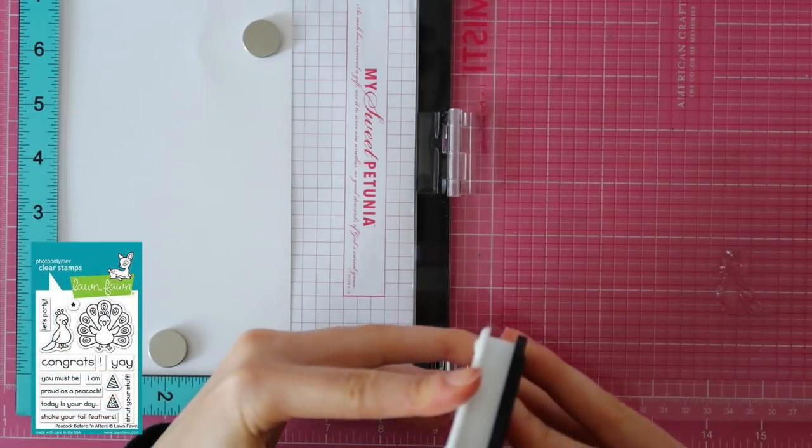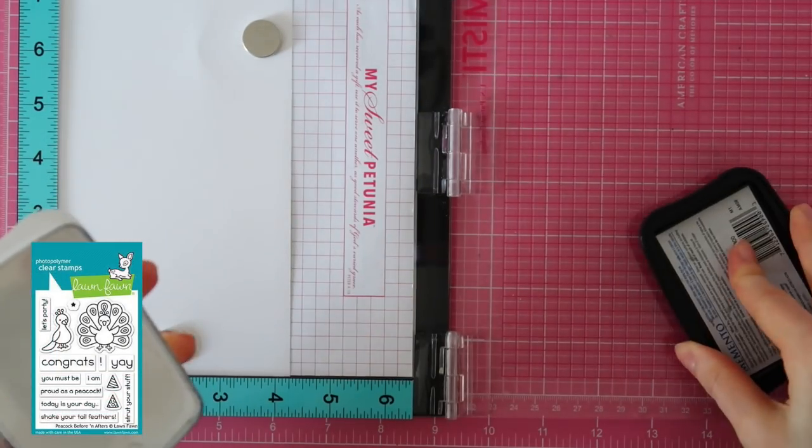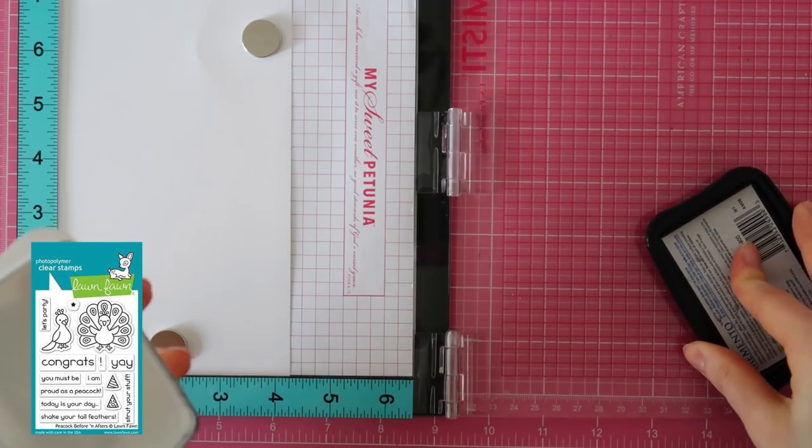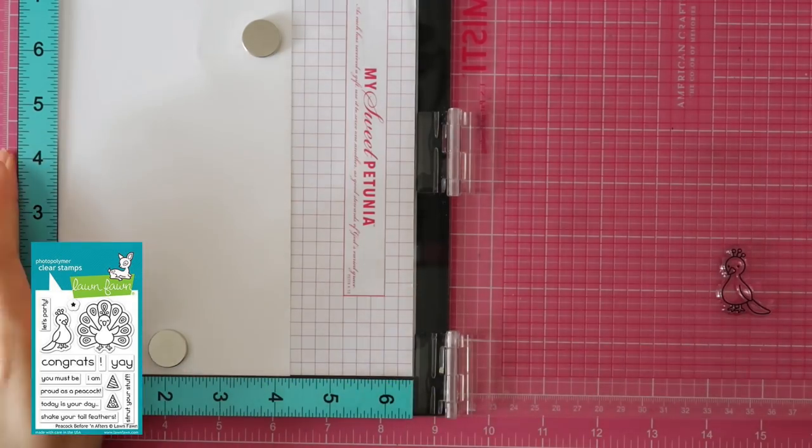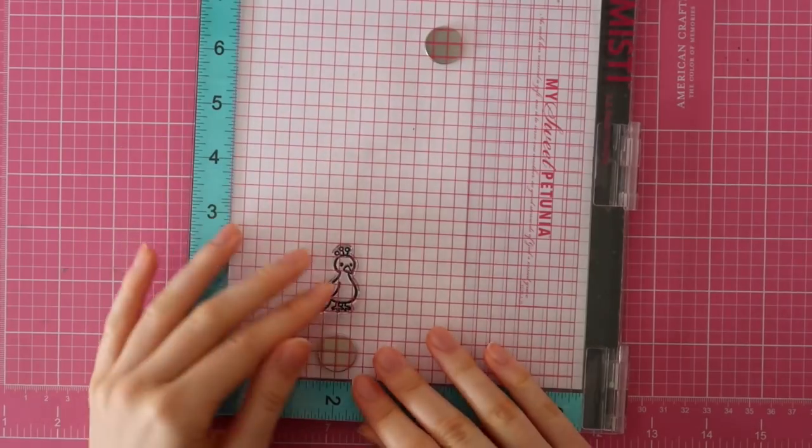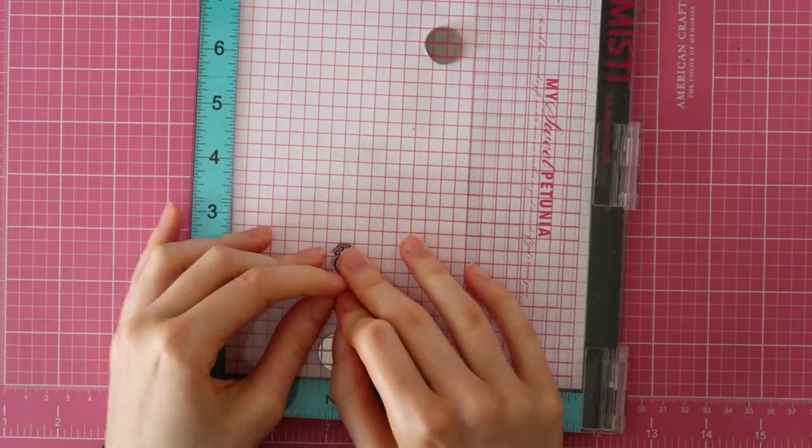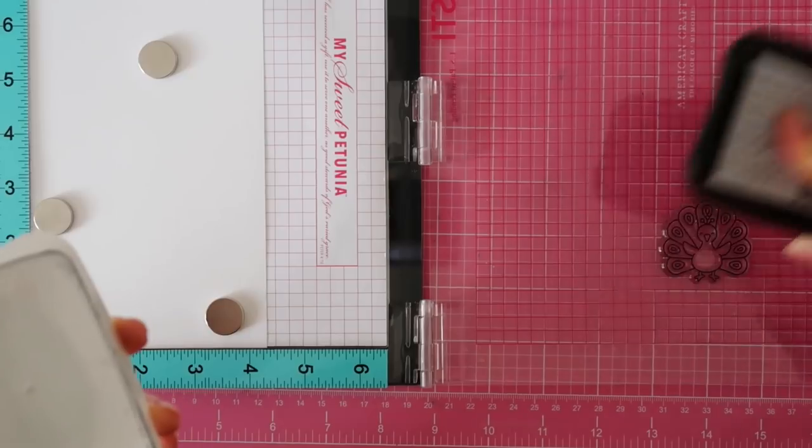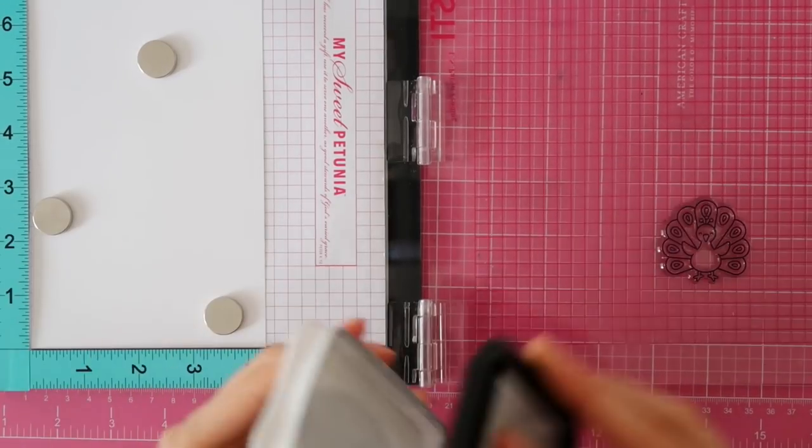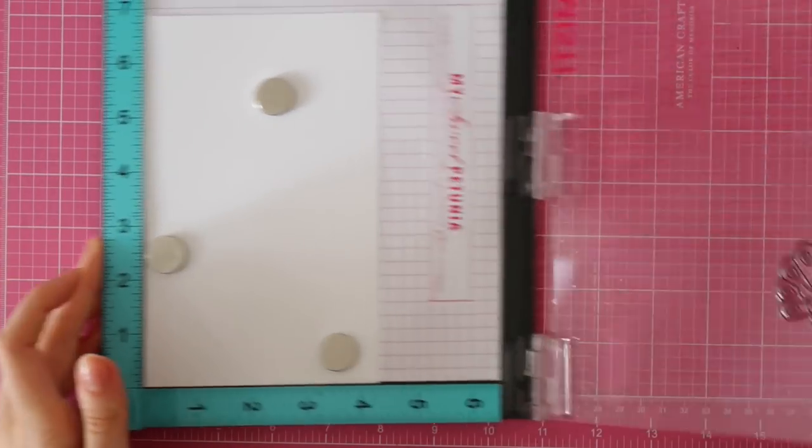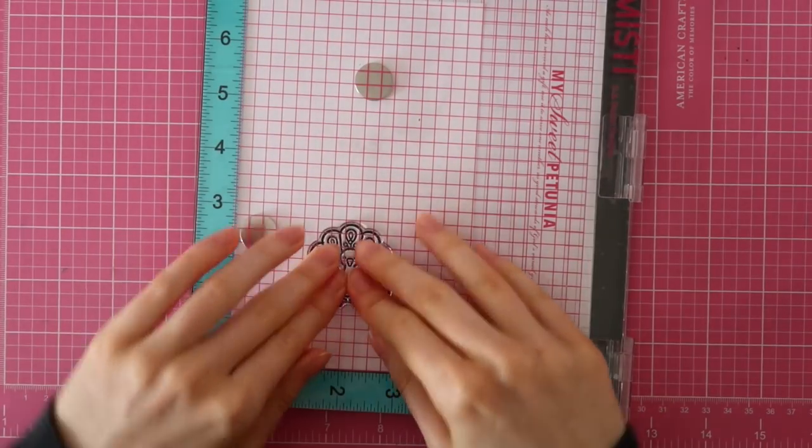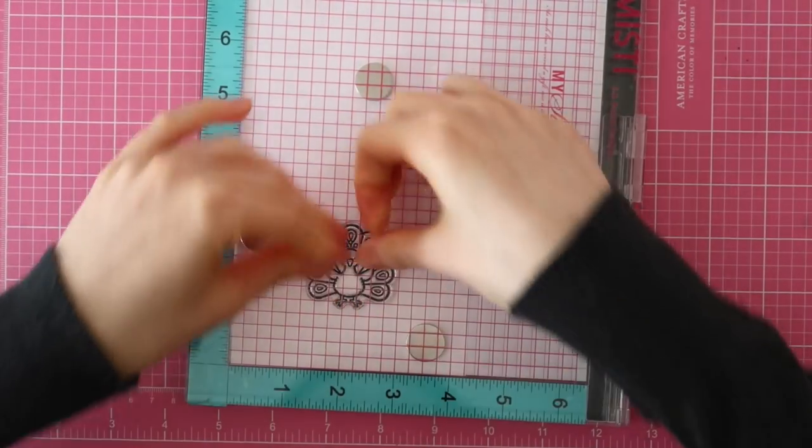I am starting out with two pieces of white Neenah 80lb cardstock and I'm going to stamp the peacocks on each piece of paper. For my first piece, I am stamping the peacock without showing his feathers, and then for my second piece I am stamping the peacock that is showing his beautiful gorgeous feathers.